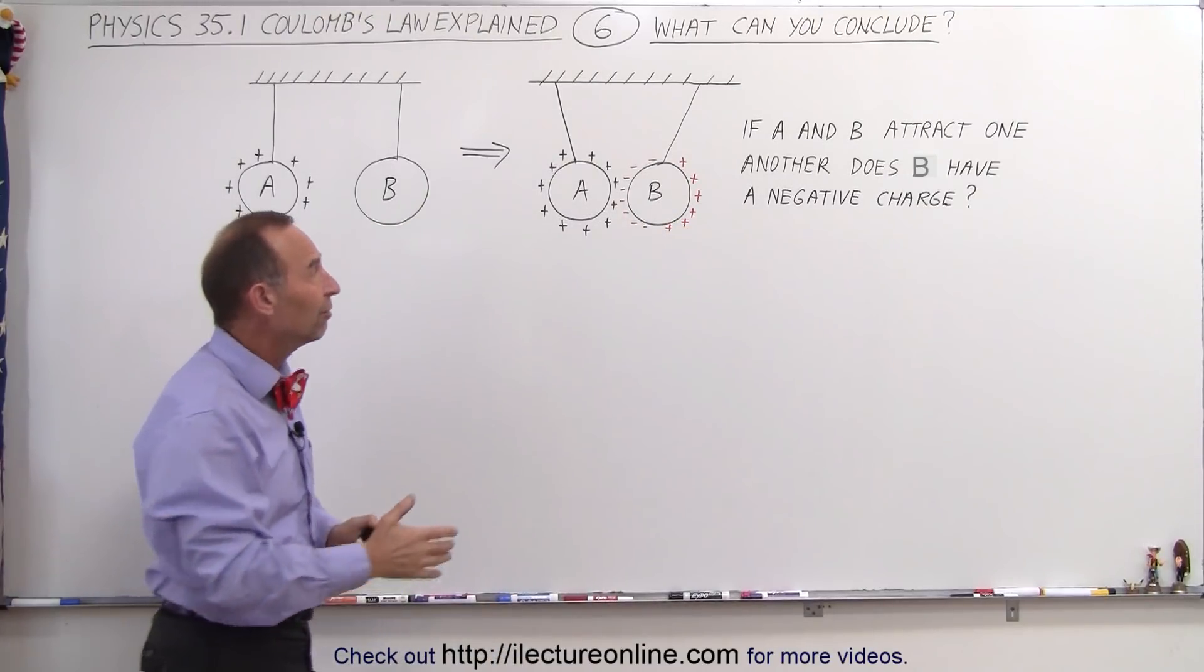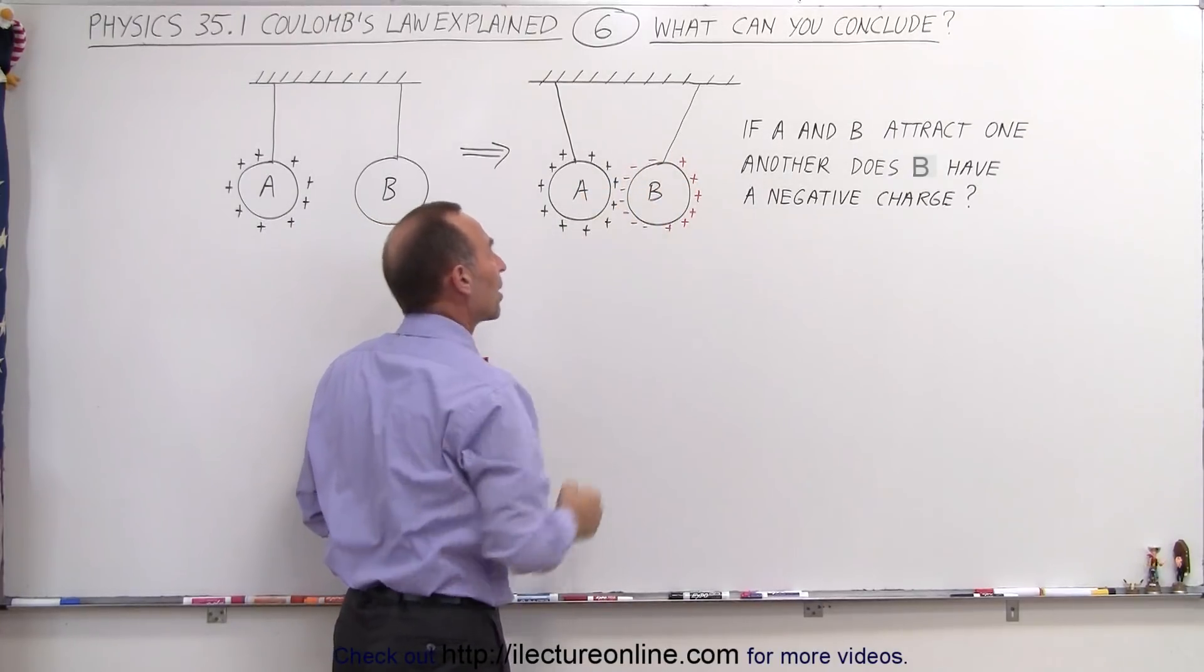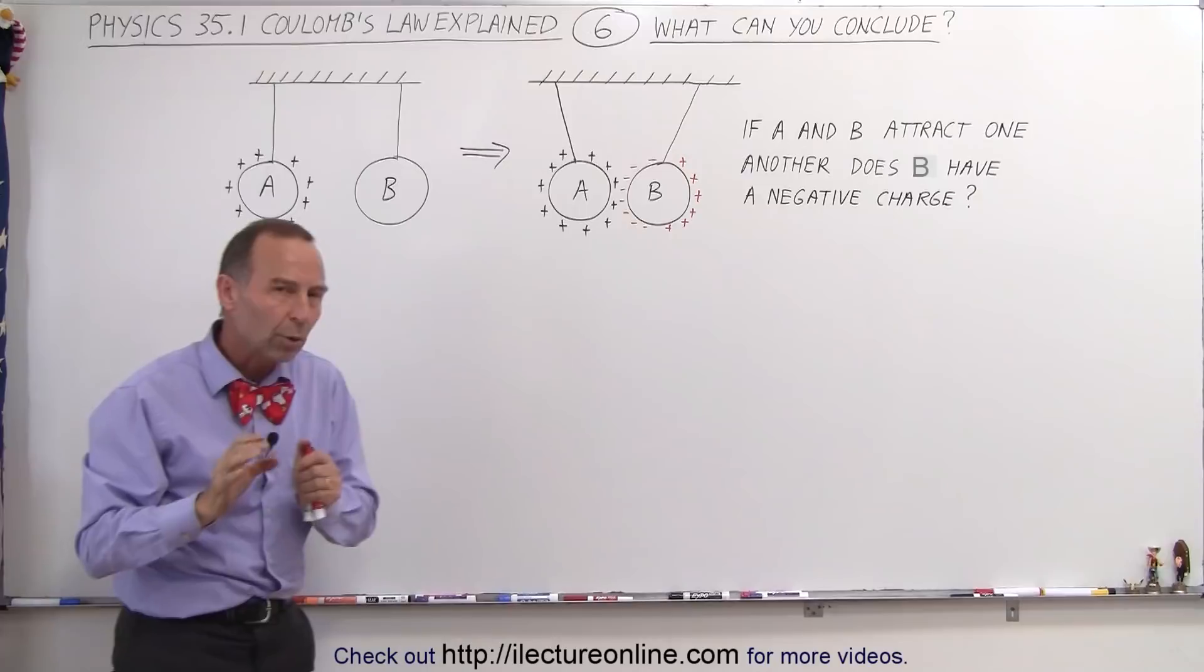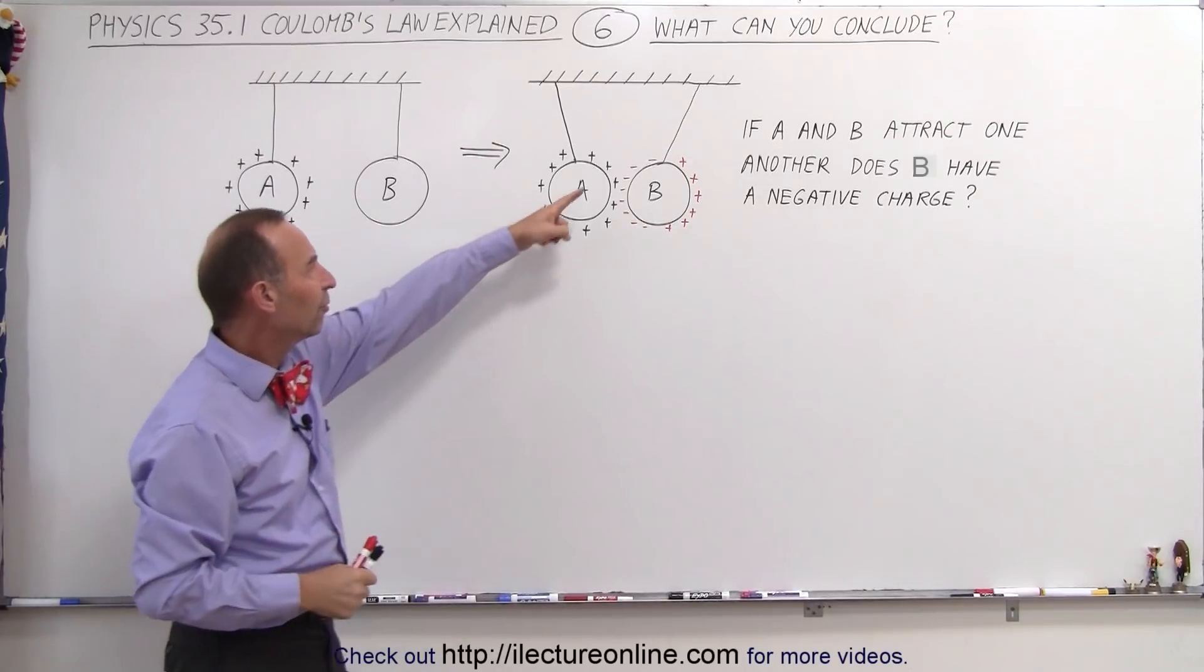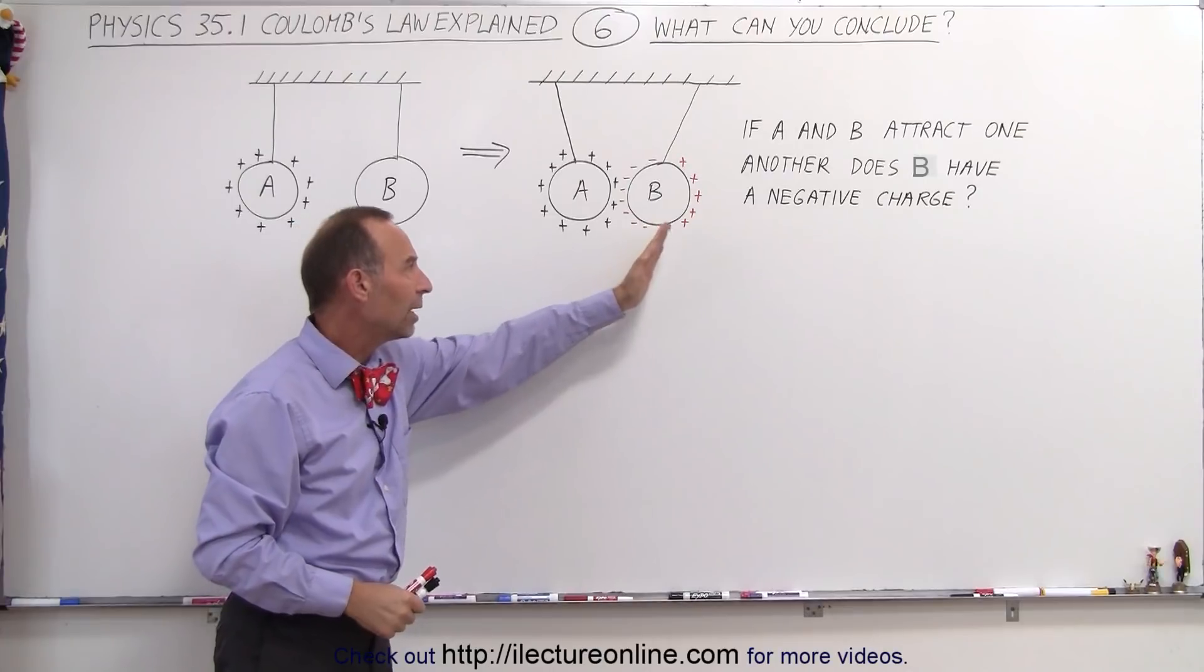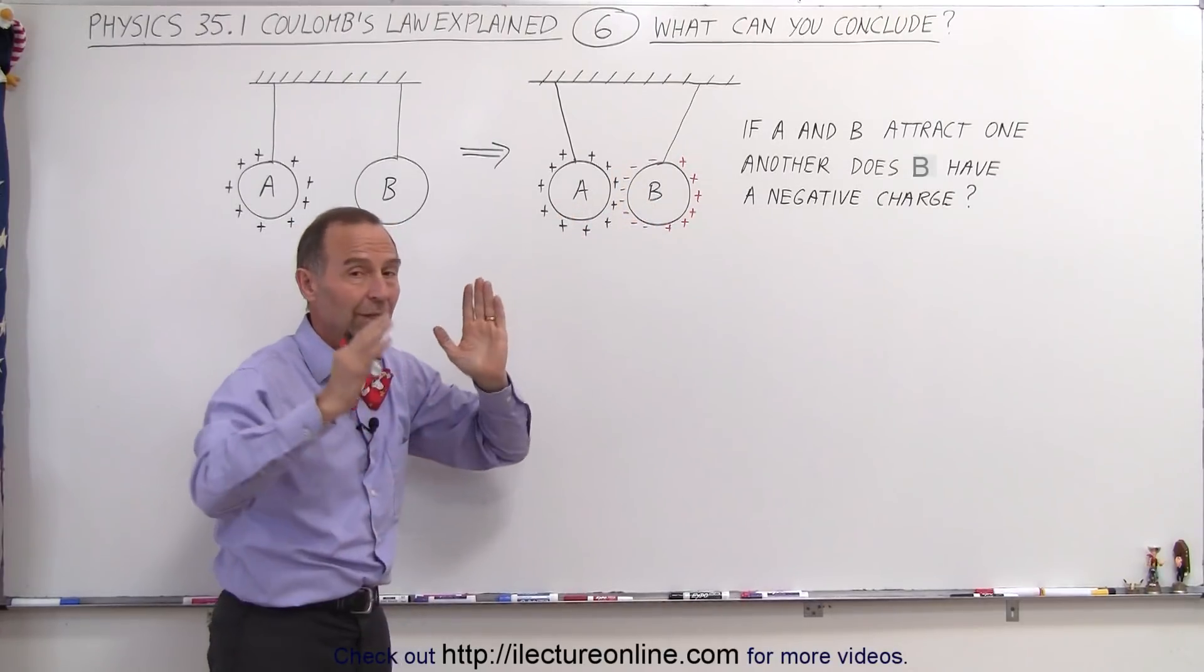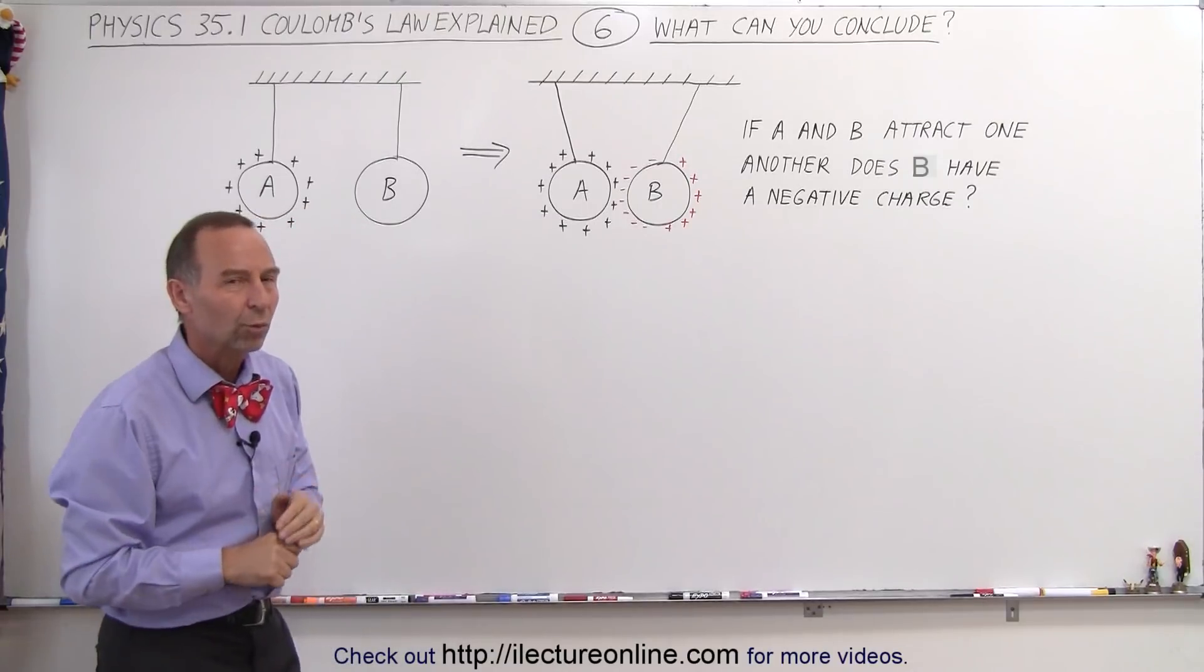Maybe not as much as if B was completely negatively charged, and then of course it would attract more strongly, but because the polarization effect of the influence of the charges on A will cause negative charges to move this way, leaving the other side more positively charged, and since these are closer, they will indeed be attracted towards one another.